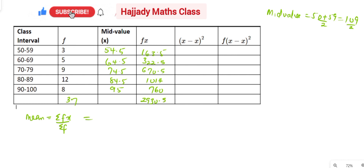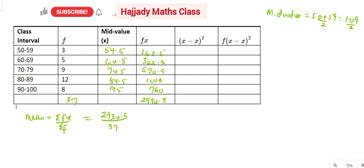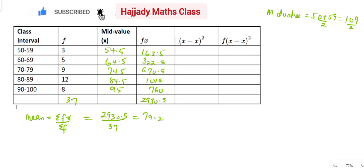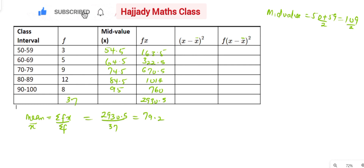So with this, my mean is going to be 2930.5, which is the summation of fx over summation of f, which is 37. From this, my mean is going to be 79.2. Don't forget that the mean is the same as x̄ — as I explained the notation in our previous video, we can use x̄.